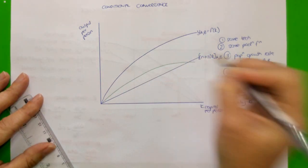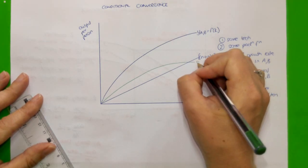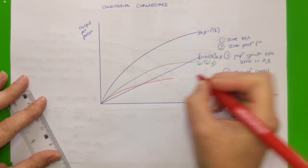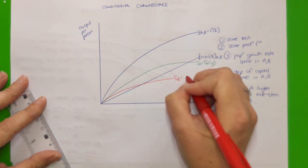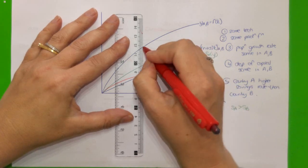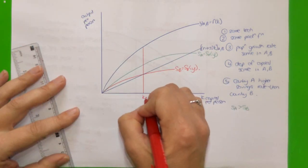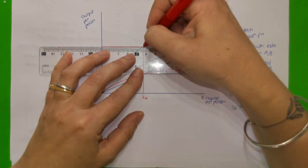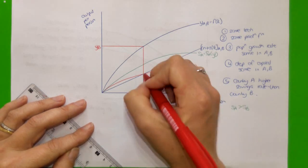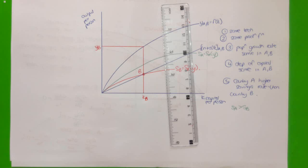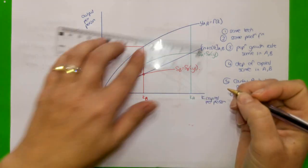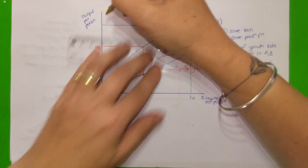I'm going to draw the savings function for country A in green: S_A = s_A · Y. The savings function for country B I'll draw in red: S_B = s_B · Y. When these two countries reach steady state, they look a bit different. For country B, the steady state level of capital stock and output per person is lower. For country A, the steady state level of capital per person is higher, and the steady state level of output per person is all the way up above country B's.